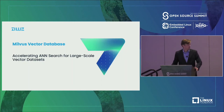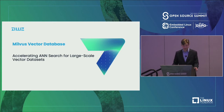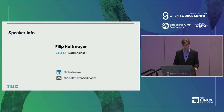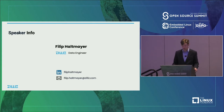Hi everyone, thank you for joining me in this presentation, whether you're online or in person. Today I'll be going over Milvus, our vector database, and its attempt to accelerate ANN searches on large-scale vector data sets. My name is Philip Haltmeyer, and I'm a data engineer at Zilliz. Zilliz is a data company started in 2017, now 80 people strong, and is the creator and main contributor to the Milvus project.